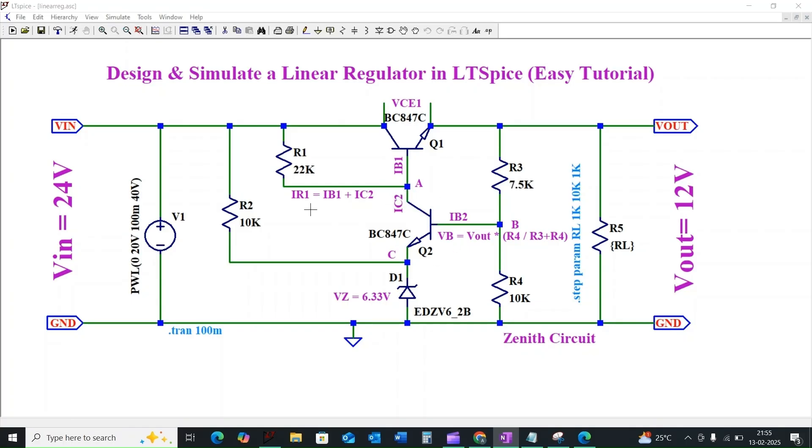So IR1 is equal to IB1 plus IC2. The zener diode D1 is connected to the emitter terminal of transistor Q2 and it is biased by the 10 kilo ohm resistor R2 and it is connected directly to the input voltage Vin.